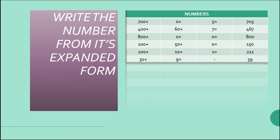800 plus 0 plus 0 means the tens place and units place are both zero, so the number is 800. Next, 100 plus 50 plus 0 gives us 150 — hundreds place is 1, tens place has 5 tens, and units place is 0. Next, 200 plus 10 plus 1 means hundreds place is 2, tens place is 1, units place is 1, so the number is 211. And 30 plus 9 gives us 39, which is a 2-digit number.